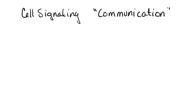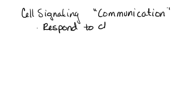When we talk about cell signaling, what we're really talking about is communication between cells. This communication is very important because what this is going to enable the cell to do is they're then going to be able to respond to changes, and those will be changes in the environment.